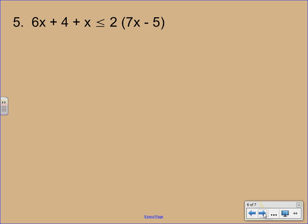Alright, number 5 here. It looks like on the left hand side, we should start by maybe combining some like terms. It's a 6x. And remember that's a 1x. So that'll give us a total of 7x. Bring down the plus 4. Bring down your inequality symbol. And then distribute the 2. We've got 14x minus 10.